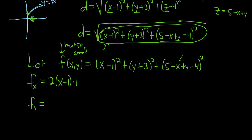Taking the partial with respect to x: the first piece gives 2 times x minus 1 times 1 by the chain rule. The derivative of y plus 3 squared is 0. And there is an x in the last piece, so we get plus 2 times 5 minus x plus y minus 4, times negative 1. We set this equal to zero.